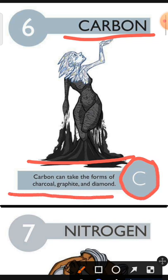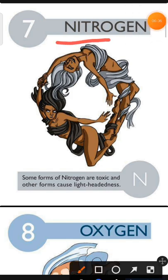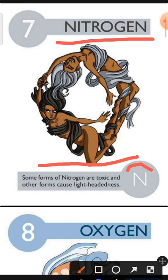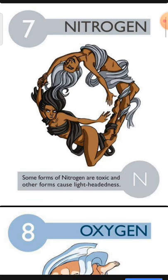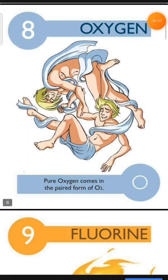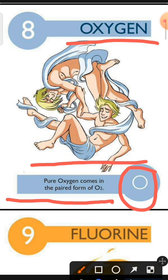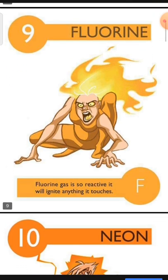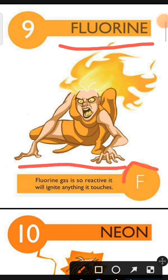Element number 7 is Nitrogen. The characteristic of Nitrogen is: some forms of Nitrogen are toxic and other forms cause light-headedness. Element number 8 is Oxygen. The characteristic of Oxygen is: pure oxygen comes in the paired form of O2. Element number 9 is Fluorine. The characteristic of Fluorine is: Fluorine gas is so reactive it will ignite anything it touches.